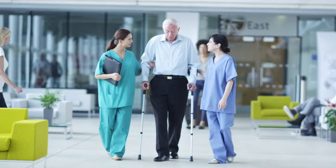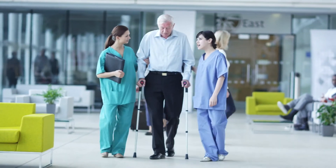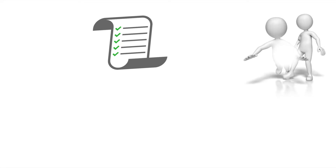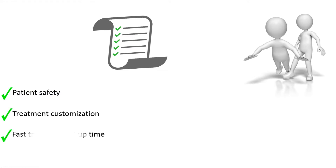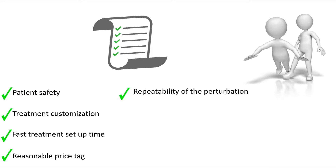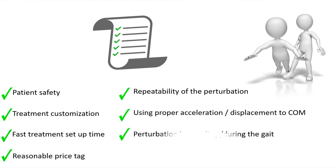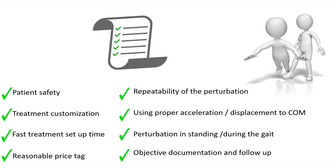Traditional balance rehabilitation still relies mainly on voluntary exercise practice. Factors that have prevented in-clinic application of unexpected perturbation training include the inability to customize perturbation and ensure patient safety during reactive response training. Other factors include the lack of perturbation intensity repeatability, as well as the inability to use the required acceleration intensity and perturbation direction needed to actively displace the COM during both the stance and gait phase. Finally, the inability to objectively document treatment outcomes and follow-up has not been available.